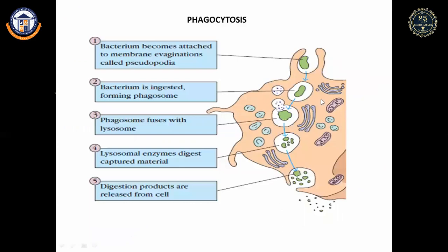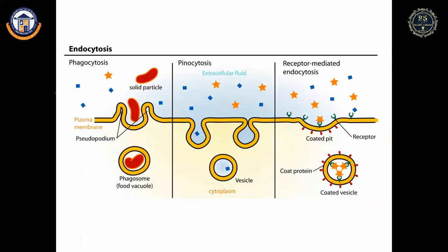In the phagocytic barrier, when phagocytic cells encounter an antigen, they produce protrusions — initially called pseudopodia — which engulf the bacteria. The engulfed material enters the cell forming a phagosome, which then fuses with the lysosome. The lysosome contains hydrolytic and lytic enzymes that kill the antigen, and the debris is released. This phagocytosis comes under endocytotic barriers.